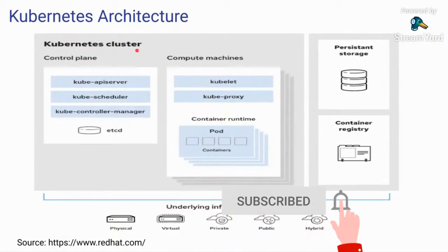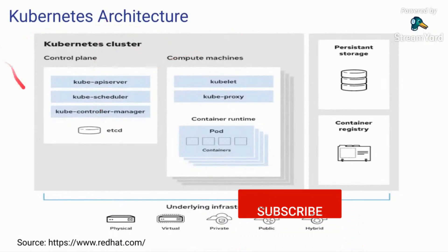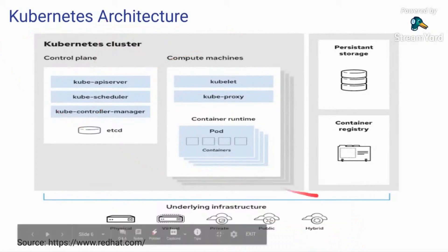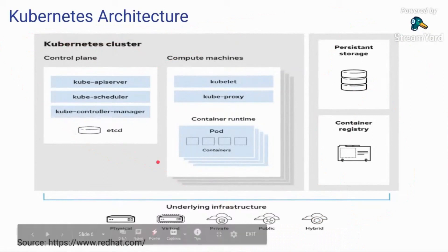This is the Kubernetes architecture. A working Kubernetes deployment is called a Kubernetes cluster. All of this is a Kubernetes cluster — even this is part of a Kubernetes cluster. Everything is part of a Kubernetes cluster.